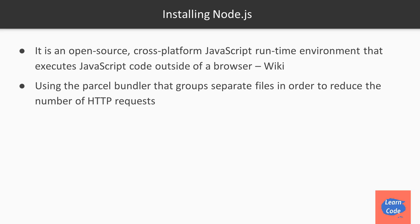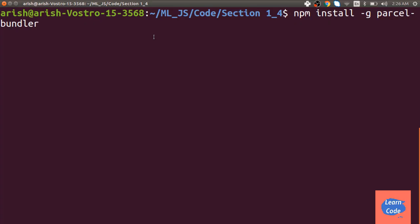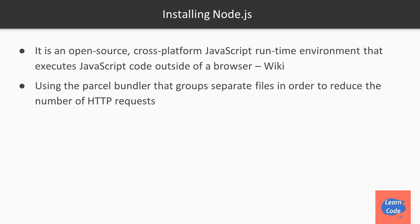Once Node.js is installed, we'll install the parcel bundler. The parcel bundler helps group separate files to reduce the number of HTTP requests sent between our systems and the server. To install it, open your terminal and enter the command: npm install -g parcel-bundler. Once you click enter, it starts the installation process.